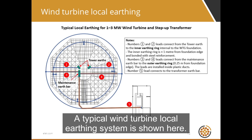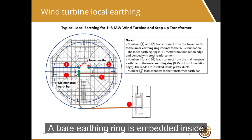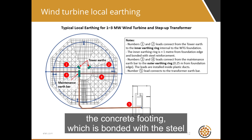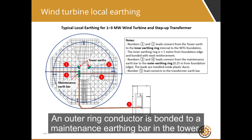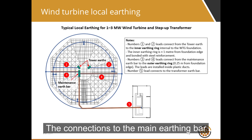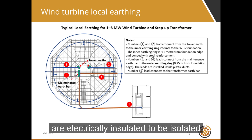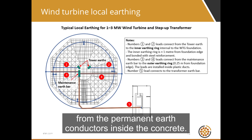A typical wind turbine local earthing system is shown here. A bare earthing ring is embedded inside the concrete footing, bonded with the steel reinforcement and permanently with the tower earthing points. An outer ring conductor is bonded to a maintenance earthing bar in the tower. The connections to the main earthing bar are electrically insulated to be isolated from the permanent earth conductors inside the concrete.